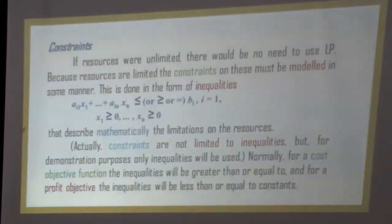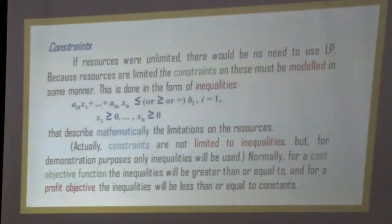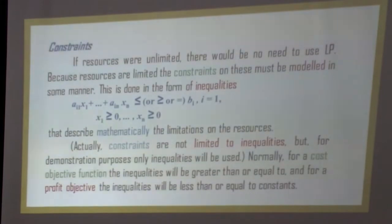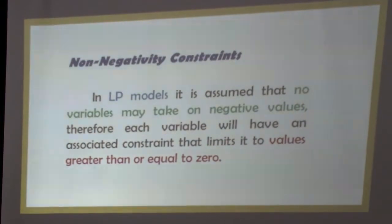The constraints are inequalities that describe mathematically the limitations on resources. For a cost objective function, the inequalities will be greater than or equal to; for a profit objective, the inequalities will be less than or equal to constants. The non-negativity constraints state that decision variables cannot take negative values: X₁, X₂, ..., Xₙ ≥ 0.